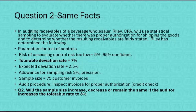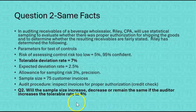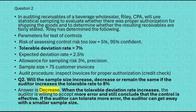Question two, based on the same facts: will the sample size increase, decrease, or remain the same if the auditor increases the tolerable rate to 8%? The tolerable rate is currently 7%, meaning the auditor can tolerate seven errors out of every 100 items. If the auditor can suddenly tolerate more error — like eight errors out of every 100 — then the auditor doesn't have to look at as much, resulting in a smaller sample size. The answer to number two is decrease, because when the tolerable deviation rate increases from 7% to 8%, the auditor is willing to accept more error and can get away with a smaller sample size.